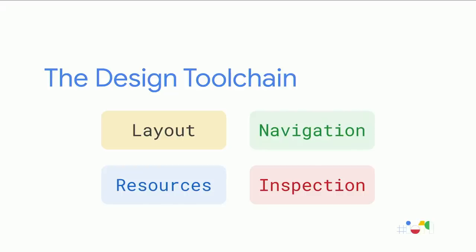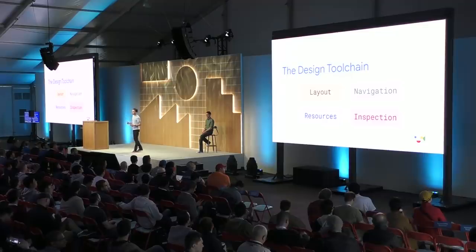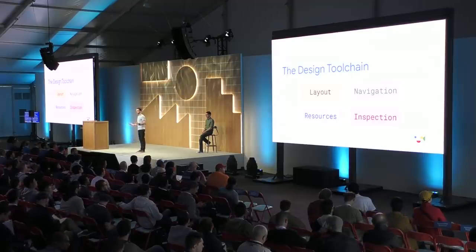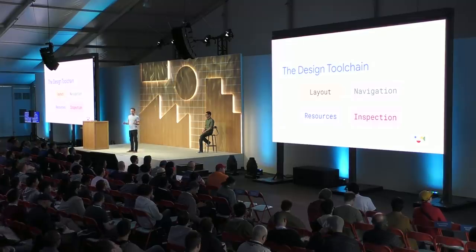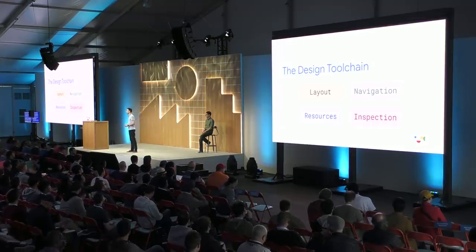Improving Android Studio is not just about fixes. It's also about improving how you use it and filling any gaps that we might have identified. Our toolchain, when it comes to design, is: building your layout, building the navigation between the layouts, managing your resources, and dealing with inspection at runtime on your device.